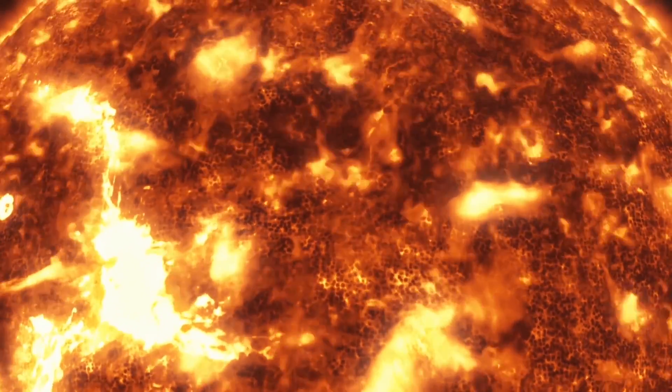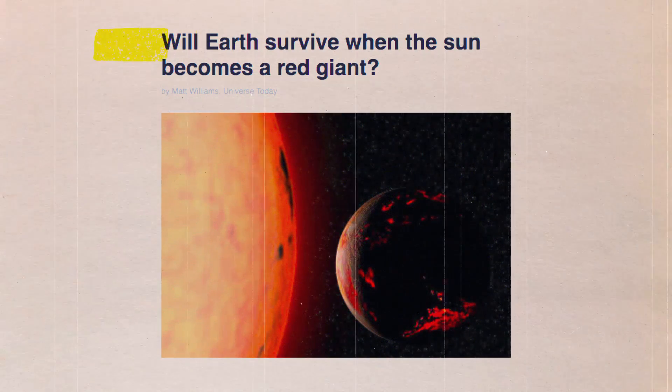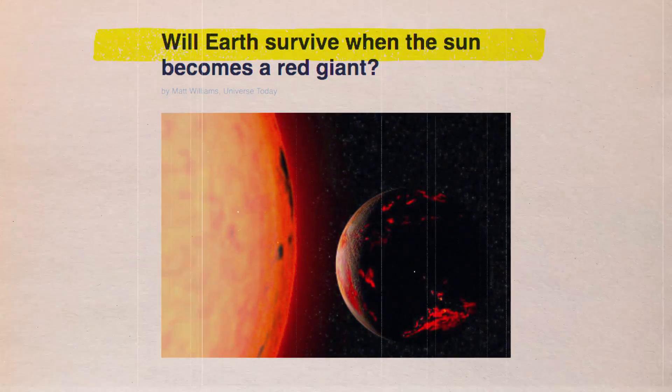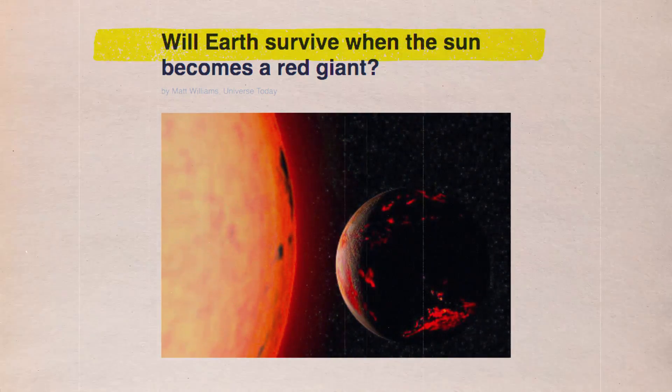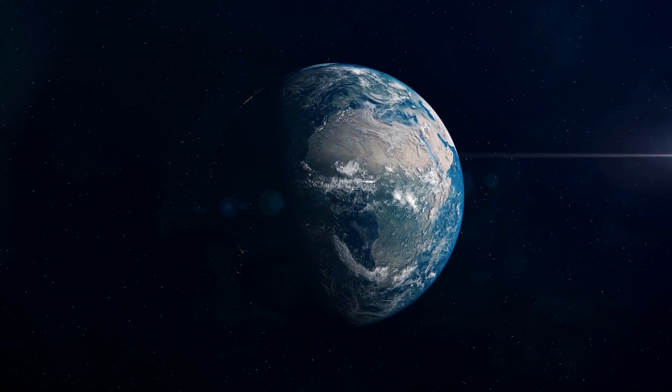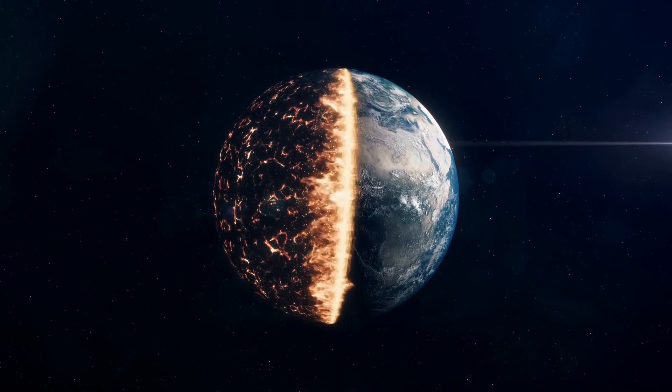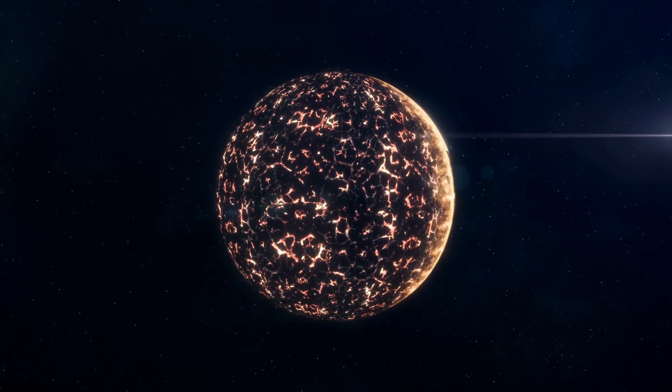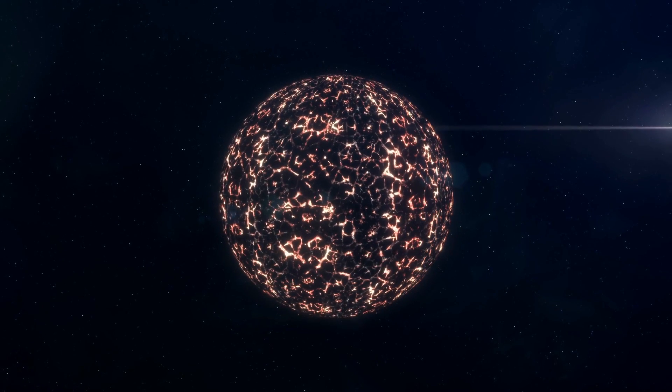It is predicted that it will ultimately become a red giant star. The Sun's outer layers will expand into the solar system's space to the point where Earth will be devoured by the Sun's outer layers. This is projected to occur in around 7.5 billion years.